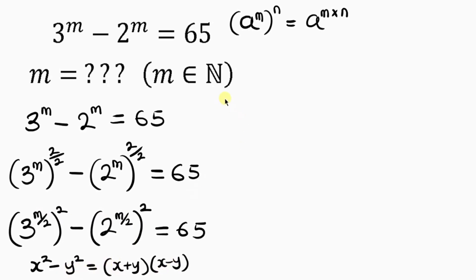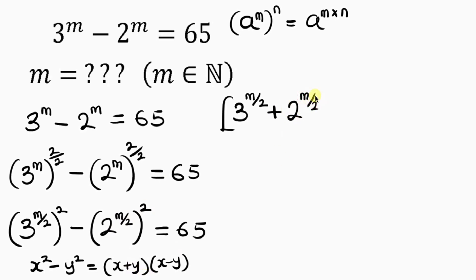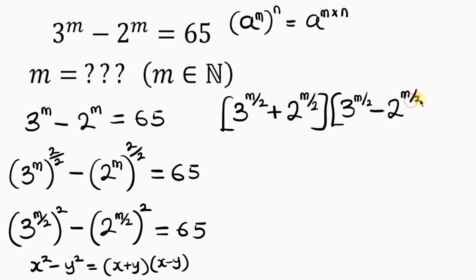Opening a bracket: x is what I have raised to the power of 2, which is 3 to the power of m over 2. So I write 3 to the power of m over 2, plus y — which is 2 to the power of m over 2 — and close the bracket. Then open another bracket with the same terms but a minus sign: 3 to the power of m over 2 minus 2 to the power of m over 2, close the bracket, equal to 65.